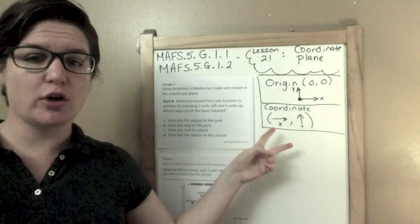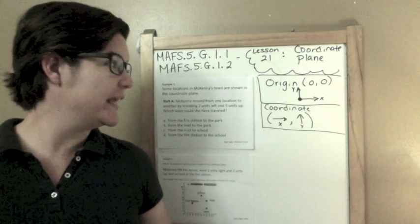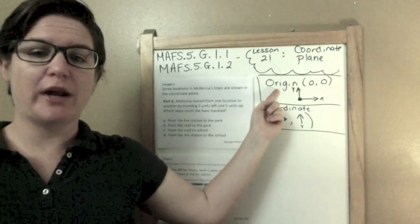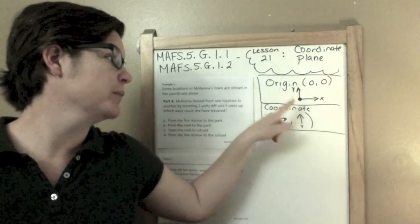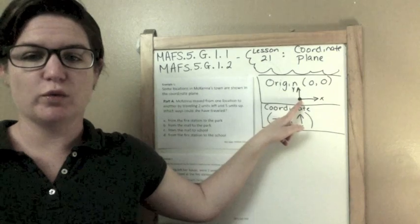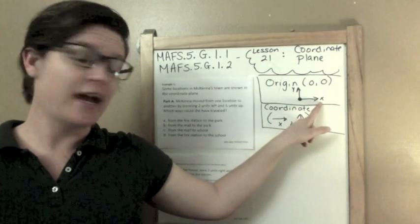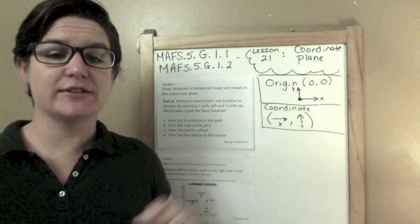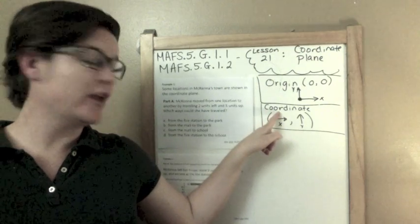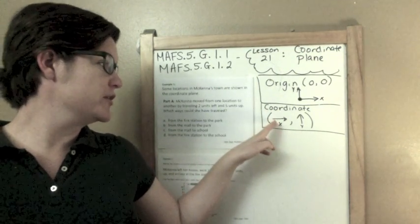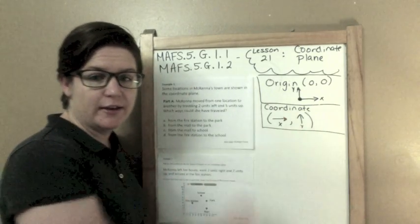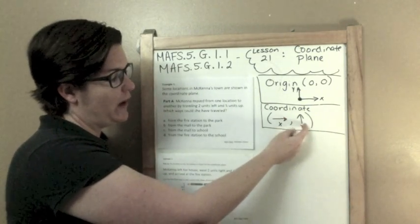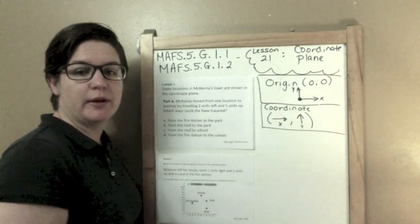Two things I want you to know before we begin. One, when I refer to the origin, I'm referring to the coordinates which would be located right here where the x-axis and the y-axis meet. And also a coordinate. The first number is your x value, that's how much you're going to go over to the right, and then your y value is how much you're going up.